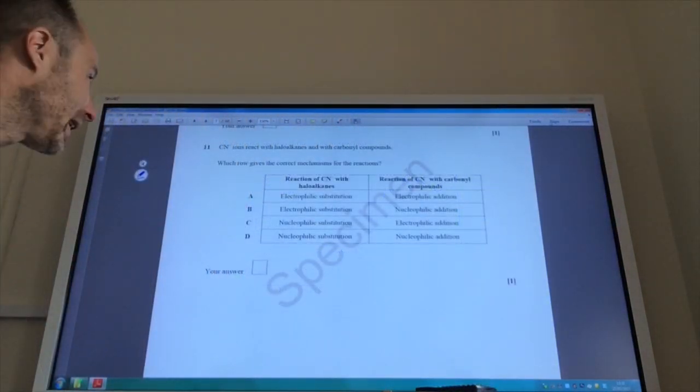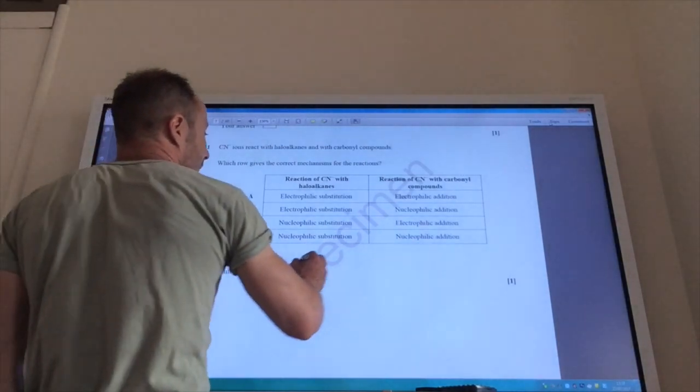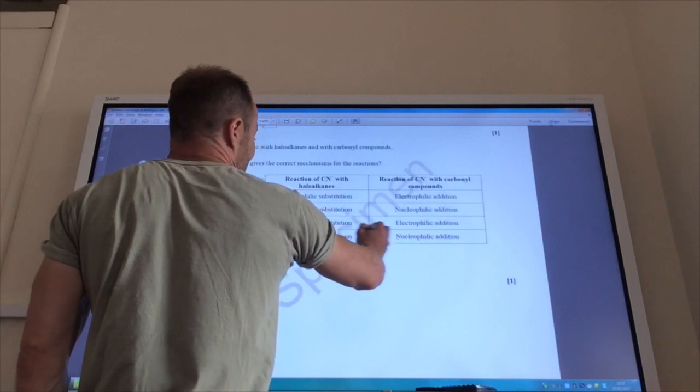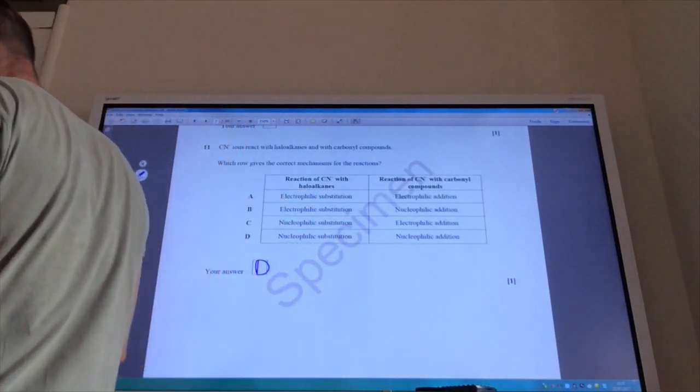Okay. So, for the next one, do you know your mechanisms? Well, if I'm reacting a cyanide ion with halogenoalkanes, it is, of course, nucleophilic substitution. And if I react it with a carbonyl, then it's nucleophilic addition. So, the answer to 11 is D.